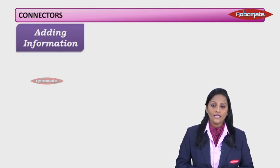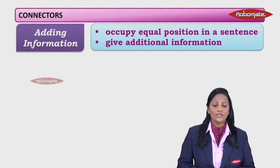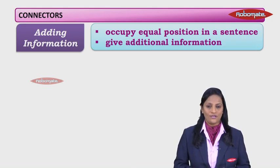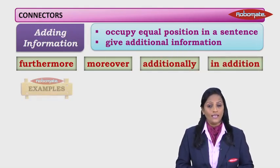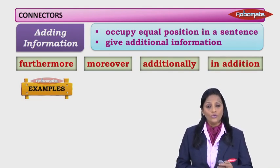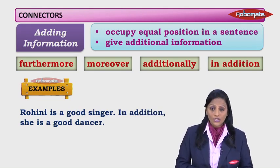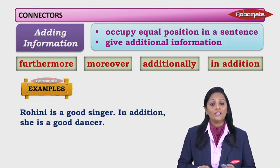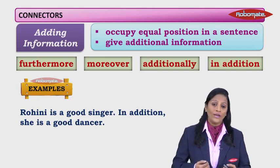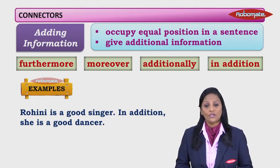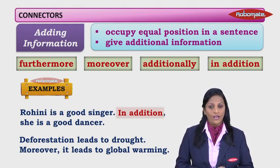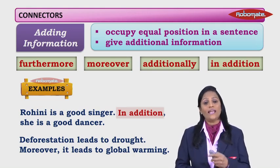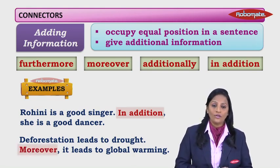Adding information: connectors that add information occupy equal positions in a sentence and give additional information. The different types include furthermore, moreover, additionally, and in addition. For example: Rohini is a good singer. In addition, she is a good dancer. Here, in addition gives extra information about Rohini. Another example: Deforestation leads to drought. Moreover, it leads to global warming. We are adding connected information, and the word that links the thoughts is moreover.